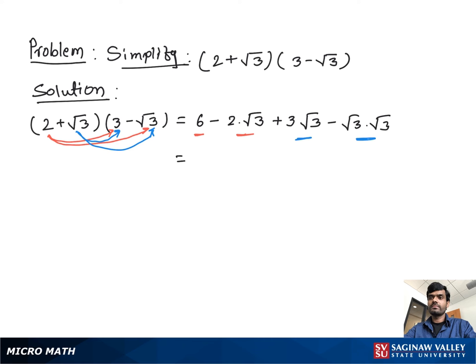Here we see square root 3 and square root 3 are like radicals, so we add them. We get square root 3, minus the product of the radicals, which gives us square root 9.